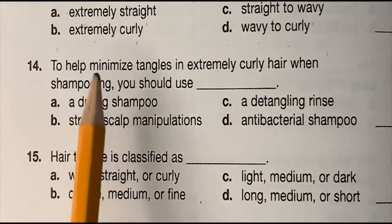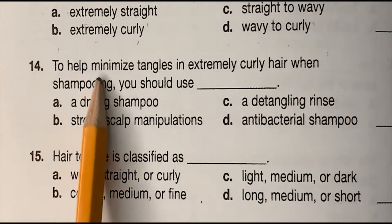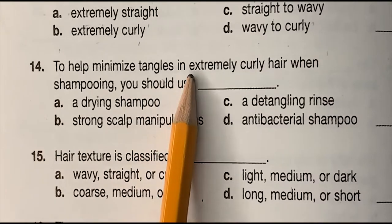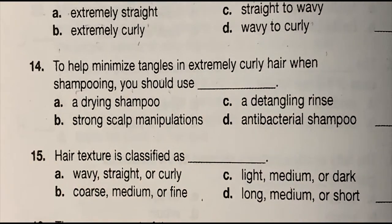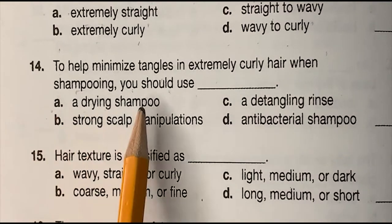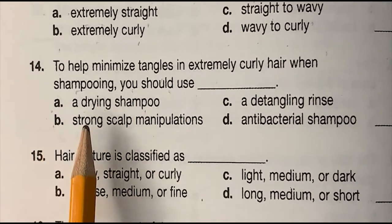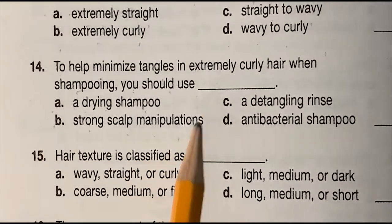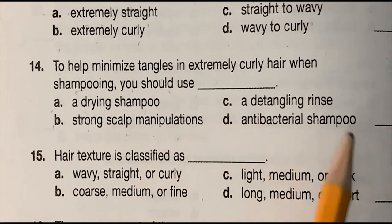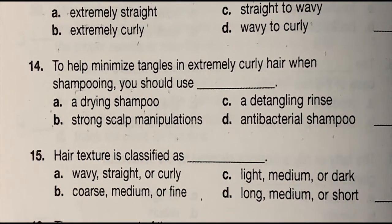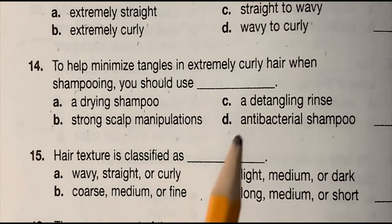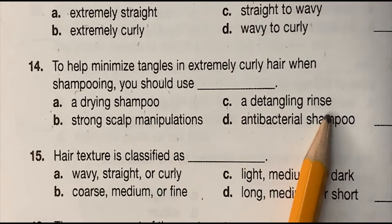Number 14: to help minimize tangles in extremely curly hair when shampooing, you should use blank — (a) a drying shampoo, (b) strong scalp manipulations, (c) a detangling rinse, or (d) antibacterial shampoo. The correct answer is (c) a detangling rinse.